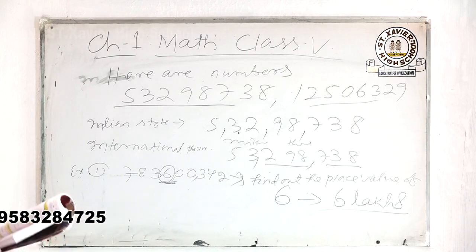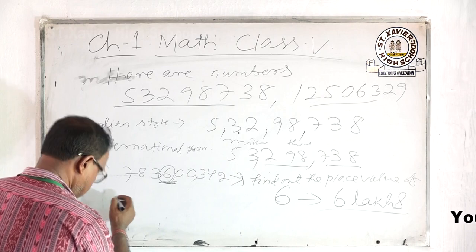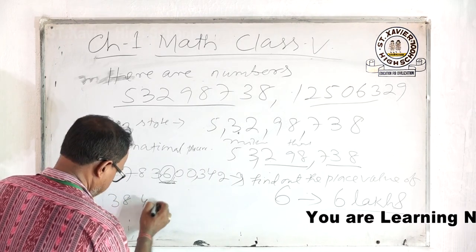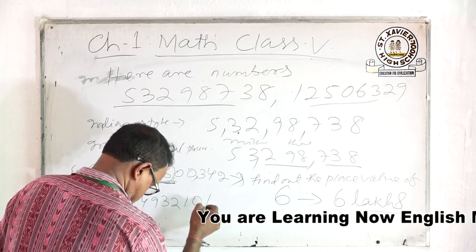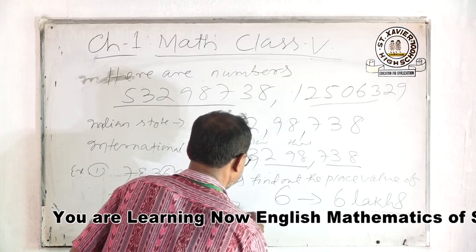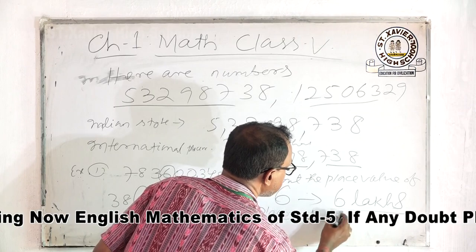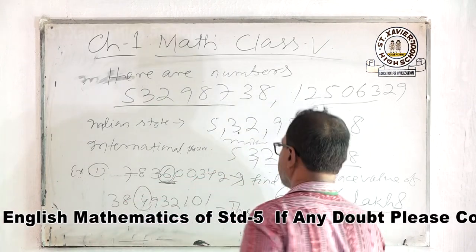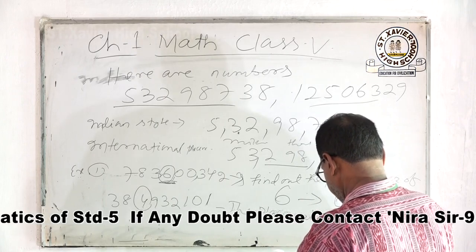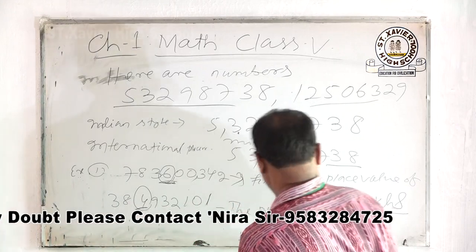In the same way, another example: in the number 3,84,93,2101, find the place value of 4. The place value of 4 is 40 lakhs.